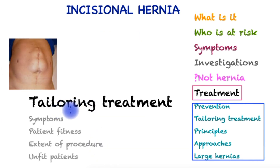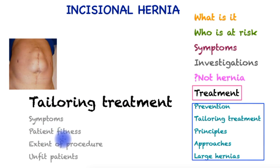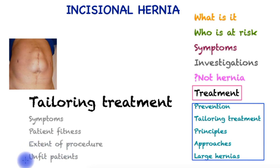Treatment must be tailored to the individual, assessing the patient's symptoms and fitness, ability to control risk factors such as obesity, smoking, and diabetes, the extent of the procedure required for the hernia, and finally making a value judgment on whether the patient is completely unfit for any intervention.